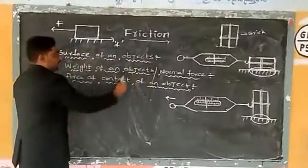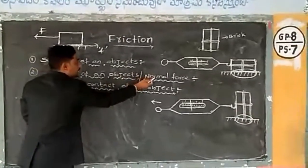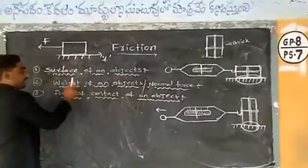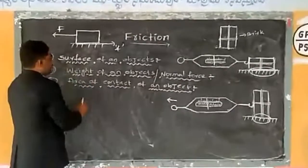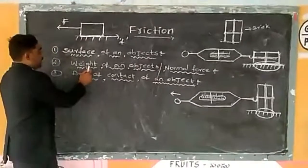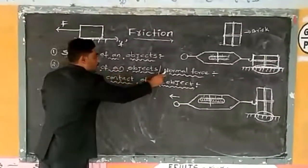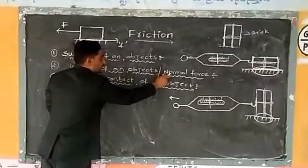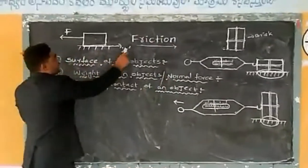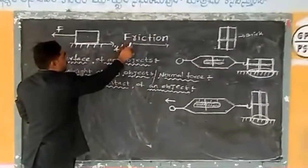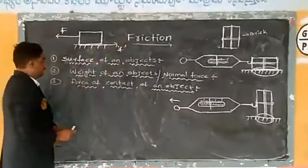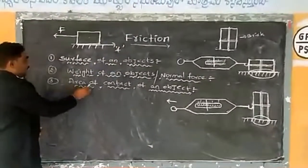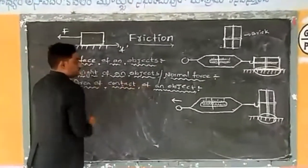When the normal force increases, automatically the weight of an object also increases, so both are essentially the same — weight of an object or normal force acting on the object. Both can affect the rate of friction. Last but not least: the area of contact of an object.